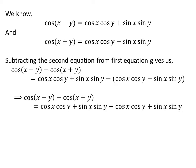Here I have removed the brackets. Straightforward addition gives us cosine of x minus y minus cosine of x plus y is equal to 2 times sine of x times sine of y.